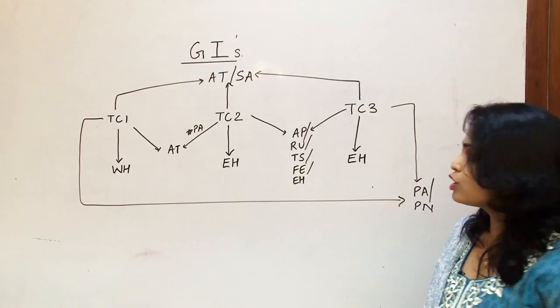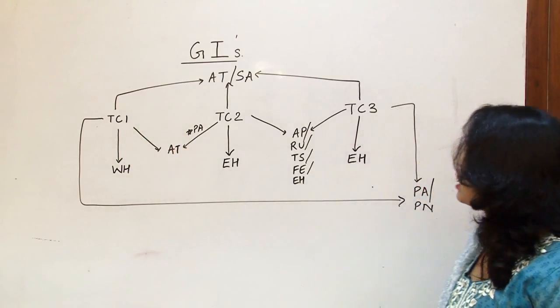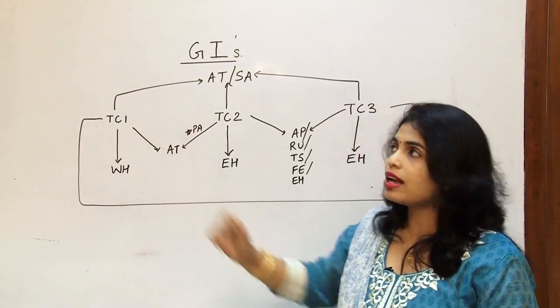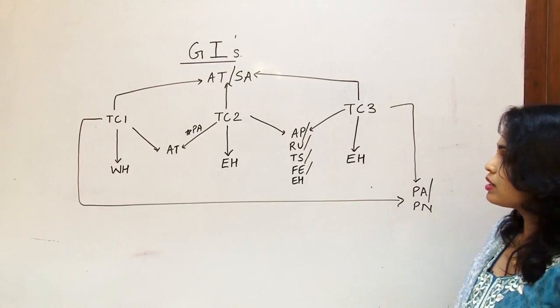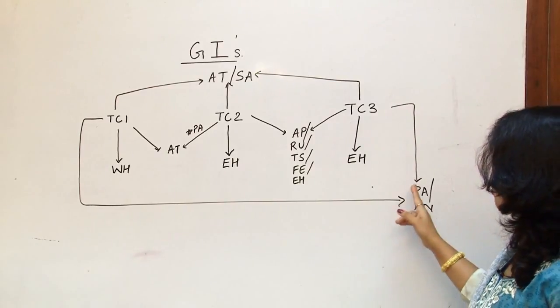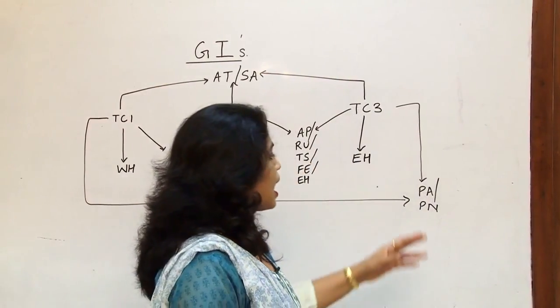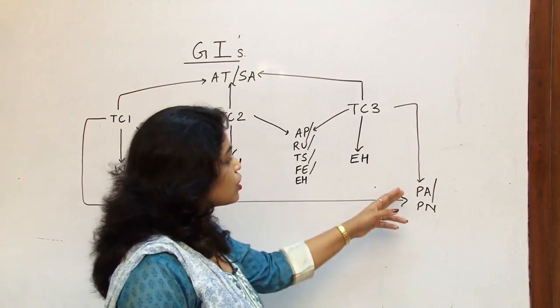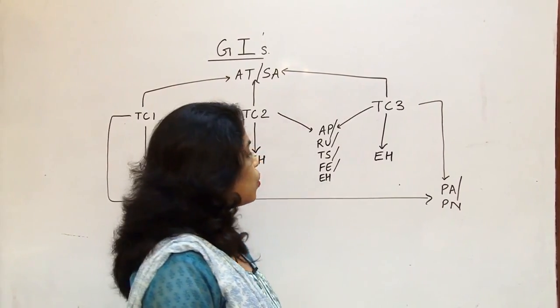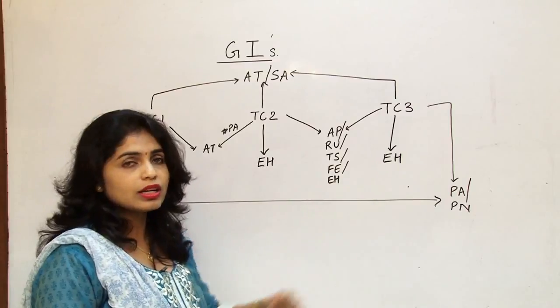Now if the flight is moving between TC1 that's traffic conference area 1 and traffic conference area 3 that is if I am talking about American side and Asian side but the flight route is taking across the Pacific that is via the Pacific so we have two global indicators which are PA and PN. So there are two global indicators over here which are PA and PN both of them will be crossing over Pacific across between TC1 and TC3.